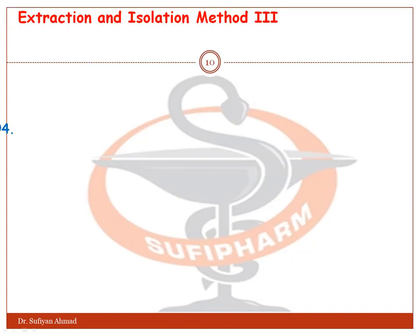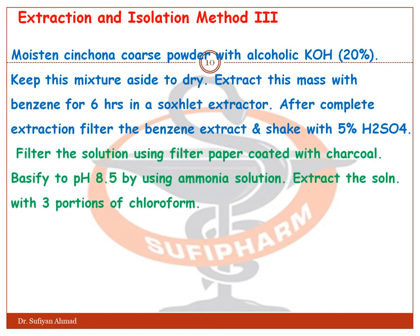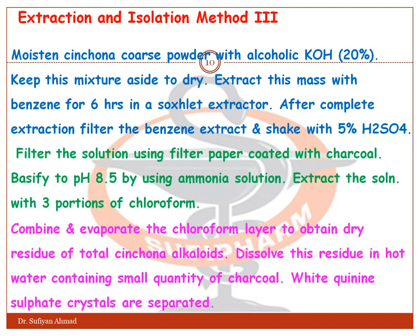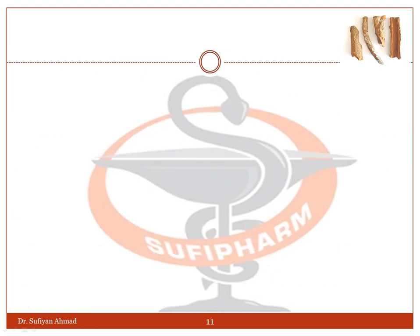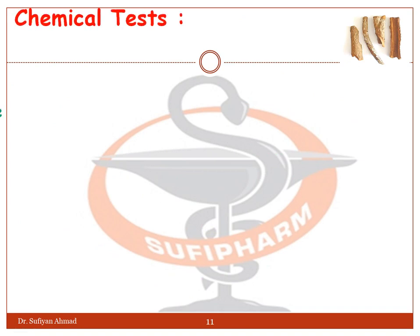Method 3: Moisten the cinchona bark with alcoholic KOH 20%, keep aside to dry, then extract the mass with benzene for 6 hours in a Soxhlet apparatus. After complete extraction, filter the benzene extract and shake with 5% H₂SO₄. Filter the solution using filter paper coated with activated charcoal. Basify to pH 8.5 using ammonia solution, extract with three portions of chloroform, combine and evaporate the chloroform layer to obtain a dry residue of total cinchona alkaloids. Dissolve this residue in hot water containing a small quantity of charcoal, and quinidine sulfate crystals are separated.